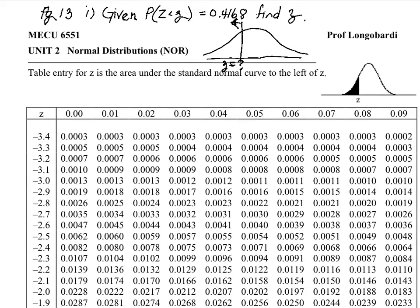In the z-type 1 problems, the question was asked in the reverse. I was given the z and then I would find the probability. Now, I'm given the probability and I need to find the z.